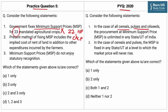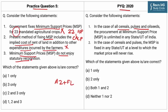Statement 2: Present methods of fixing MSP include the implied cost of rent of land in addition to other expenditures incurred by farmers. This statement is also incorrect because there are three methods of fixing MSP, and the current method is known as the A2+FL method, which includes expenditure on various inputs and the implied cost of family labor. However, this method does not include the implied cost of rent of land. Statement 3: MSP does not enjoy statutory recognition. This statement is correct.